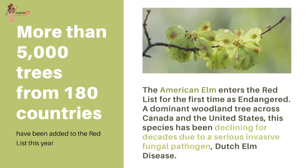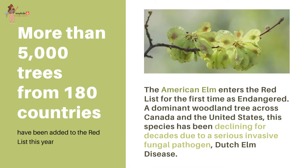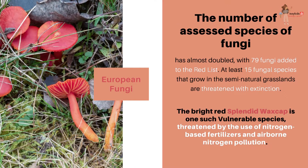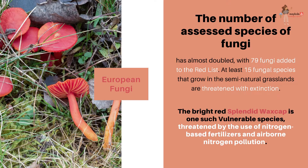More than 5,000 trees from 180 countries have been added to the Red List this year. The American elm enters the Red List for the first time as endangered — a dominant woodland tree across Canada and the United States that has been declining for decades due to the invasive fungal pathogen Dutch elm disease. The number of assessed fungal species has almost doubled, with 79 fungi added to the Red List. At least 15 fungal species that grow in semi-natural grasslands are threatened with extinction. The bright red splendid wax cap is one such vulnerable species, threatened by nitrogen-based fertilizers and airborne nitrogen pollution.